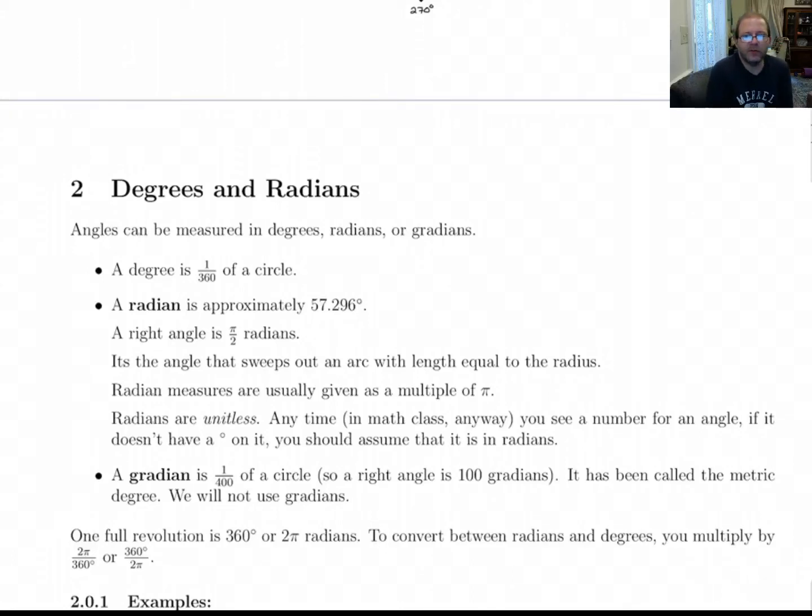Let's talk about the different units that we can use to measure angles with. There are three that are commonly known: degrees, radians, and gradians. A degree, of course, is 1/360th of a circle.